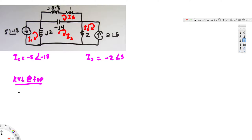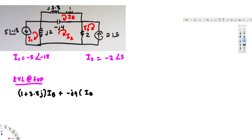We add the two series impedances together to get 1 + 3.8j, and multiply this by ib. This ib current also goes through the negative j4 impedance, so we add plus negative j4 times (ib minus i2), since i2 is going in the opposite direction. Setting this equal to zero gives us the KVL equation at the top mesh.